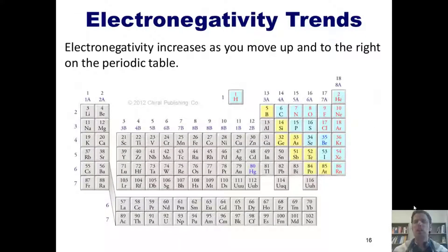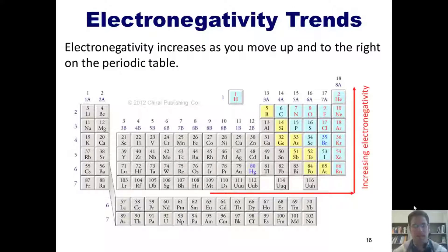As you should already know, electronegativity increases as you move up and to the right on the periodic table. Note that noble gases are excluded because they already have a full octet, they don't have a thirst for more electrons.